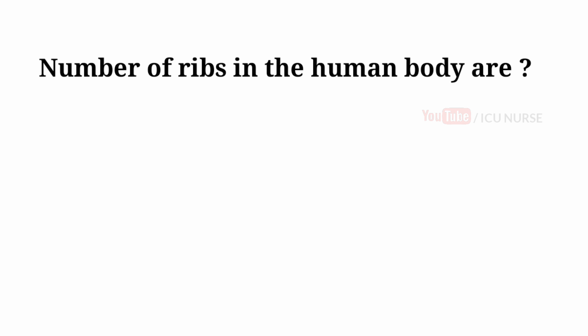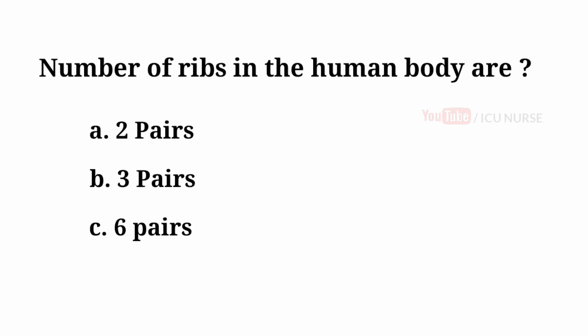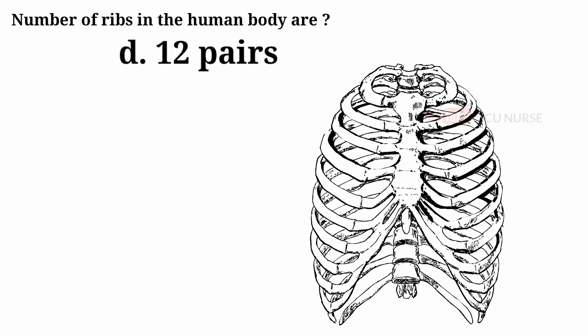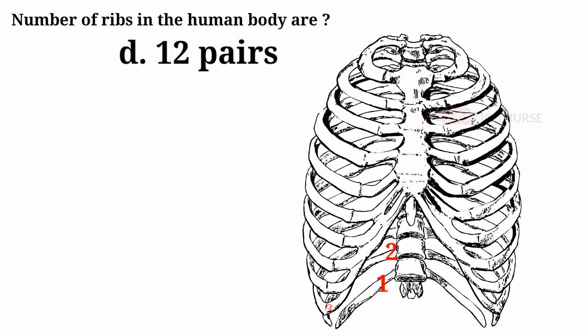Number of ribs in the human body are: A. Two pairs, B. Three pairs, C. Six pairs, D. Twelve pairs. And the answer is D. Twelve pairs. In the human body, there are twelve pairs of ribs.